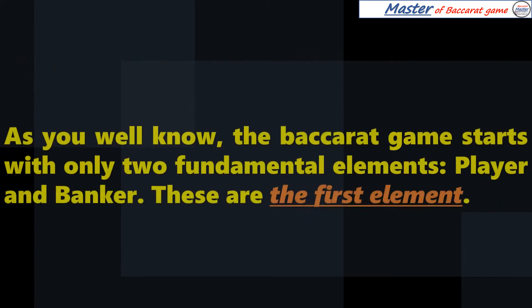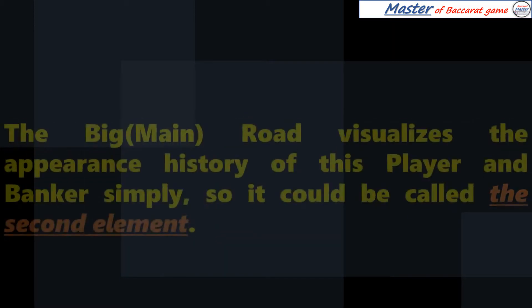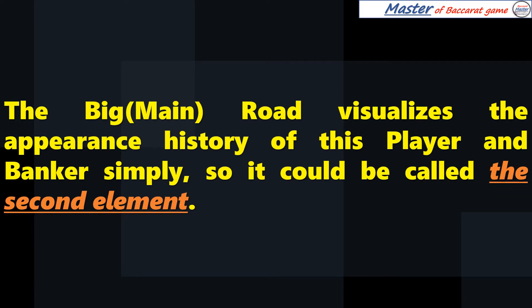As you well know, the Baccarat game starts with only two fundamental elements: player and banker. These are the first element. The big main road visualizes the appearance history of player and banker simply, so it could be called the second element.